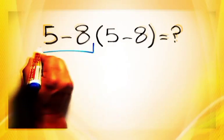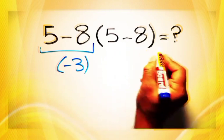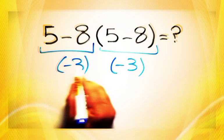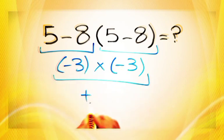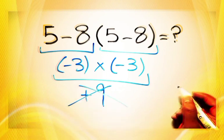Five minus eight gives us negative three. And again here we have five minus eight which equals negative three. So negative three times negative three gives us positive nine. But this answer is not correct because according to the